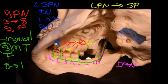So there's a summary of the key nerves on the skull that you need to know to give effective local anaesthetic.